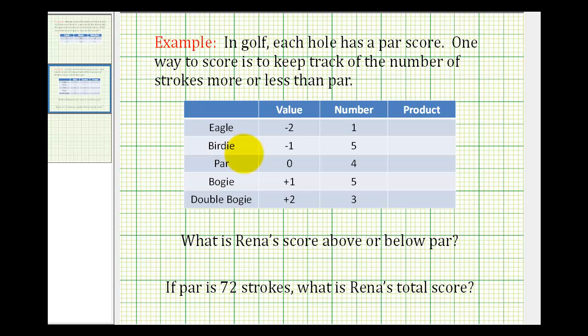A birdie is one stroke below par, represented by a negative one, and Rena had five birdies.